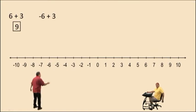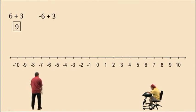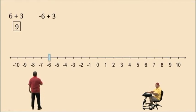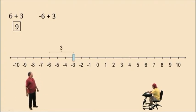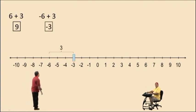Let's do another one here. How about negative 6 plus 3? We start at negative 6 and we move 3 units to the right. And what do you get, Charlie? Negative 3. Very nice there, Charlie. Very good.